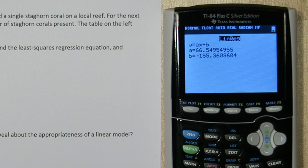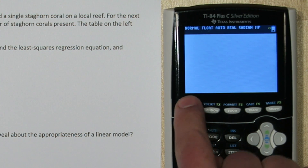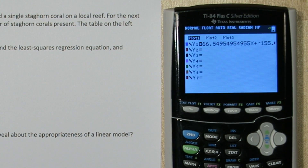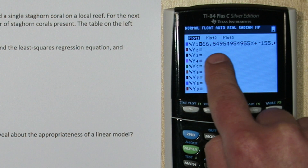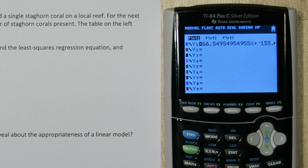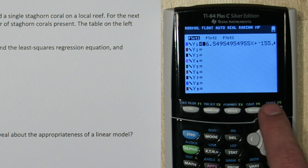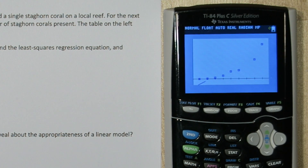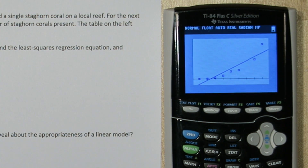Alright, here's our least squares regression equation. And if I press y equals, it's actually typed the equation into y1. So when I press graph, I can see that a linear model is not appropriate for this data set.